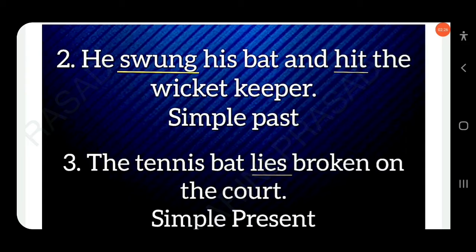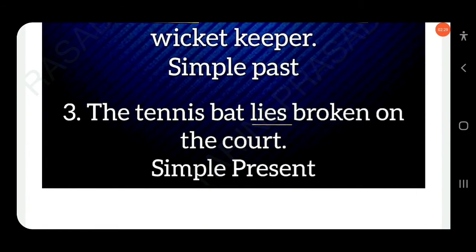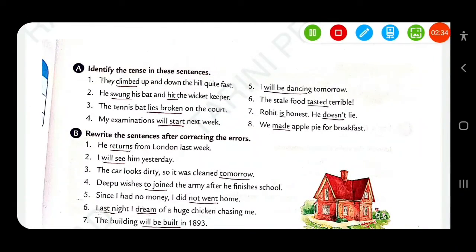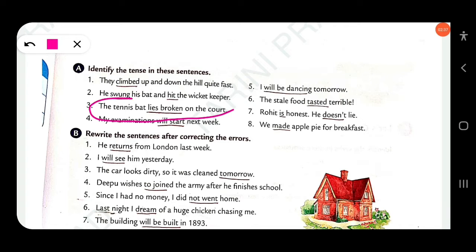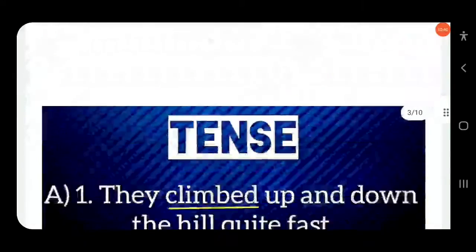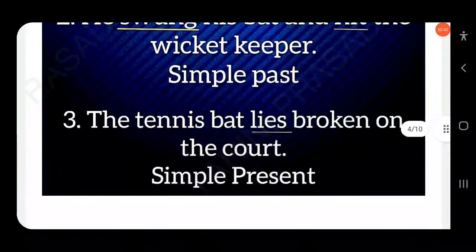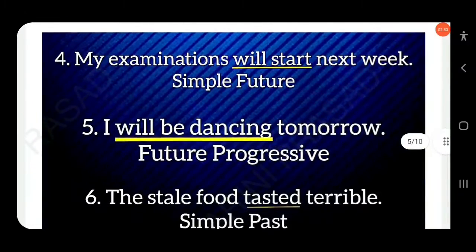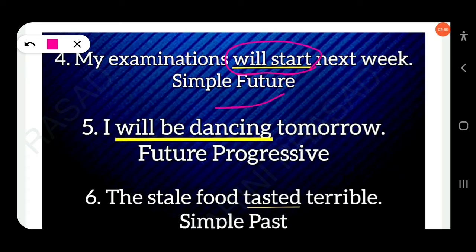Third sentence: 'The tennis bat lies broken on the court' — the verb 'lies' is simple present. Next: 'My examinations will start next week' — 'will start' is simple future, that is will plus V1. Then: 'I will be dancing tomorrow' — this is future progressive.